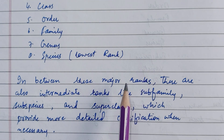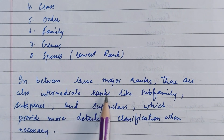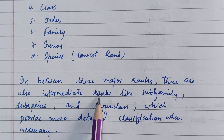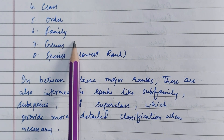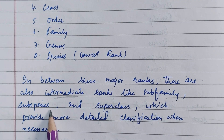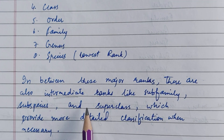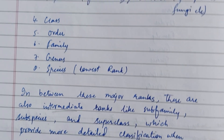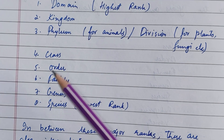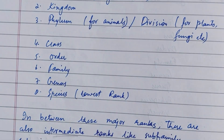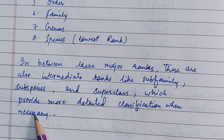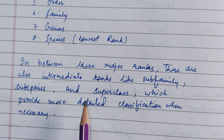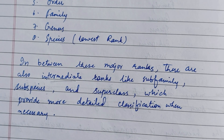In between these major ranks, there are also intermediate ranks. For example, Sub-family comes after Family; Sub-species comes after Species; and Superclass, which is above Class. These intermediate ranks provide more detailed classification when necessary.